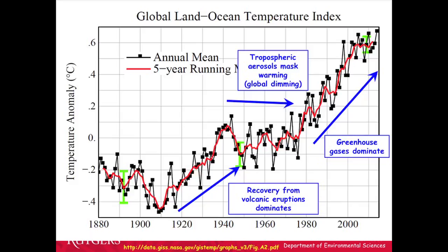Here's the global warming record produced at NASA GISS. Part of the explanation for warming in the first half of the 20th century was recovery from volcanic eruptions at the end of the 19th century. After World War II there was a lot of tropospheric pollution — a period called global dimming. After the EPA was established, the atmosphere didn't get any dirtier and greenhouse gases have dominated since. People observed that volcanic eruptions can cause cooling, and particles in the lower atmosphere can reflect sunlight — and this is the idea behind solar radiation management.